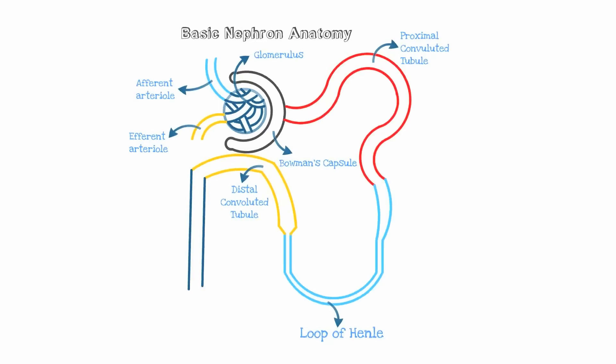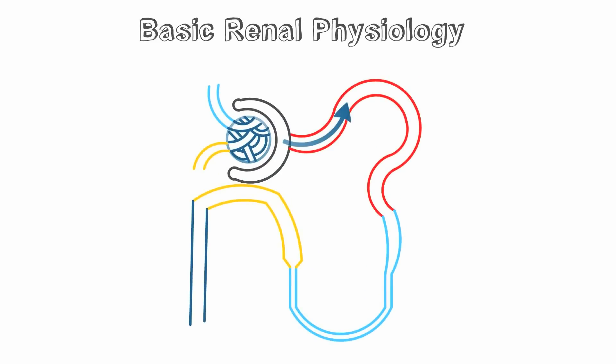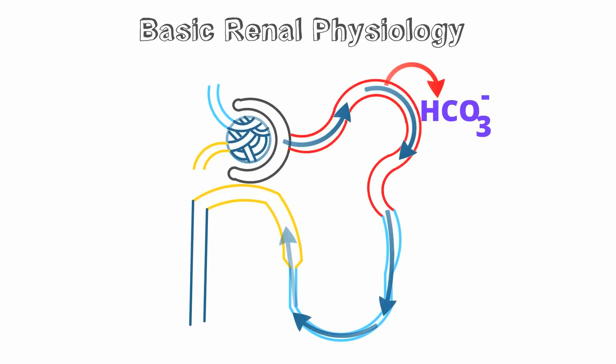Now let's briefly look at the renal physiology. Looking at the glomerulus apparatus, we see that as filtrate flows through the PCT or proximal convoluted tubule, bicarb is reabsorbed out of the tubule. The filtrate passes through the loop of Henle and then into the distal convoluted tubule where ammonium enters and acid is excreted. Remember this as you think about the renal tubular acidoses.